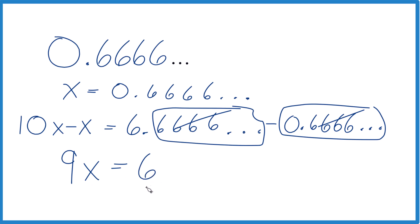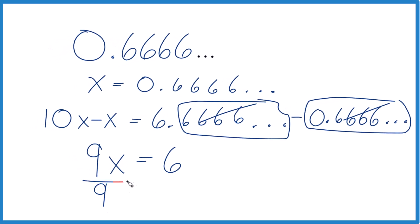9x equals 6. That looks a lot better. We divide 9 by 9 here and then 6 by 9. 9 over 9 is 1. So we can forget about those. x equals 6 ninths.